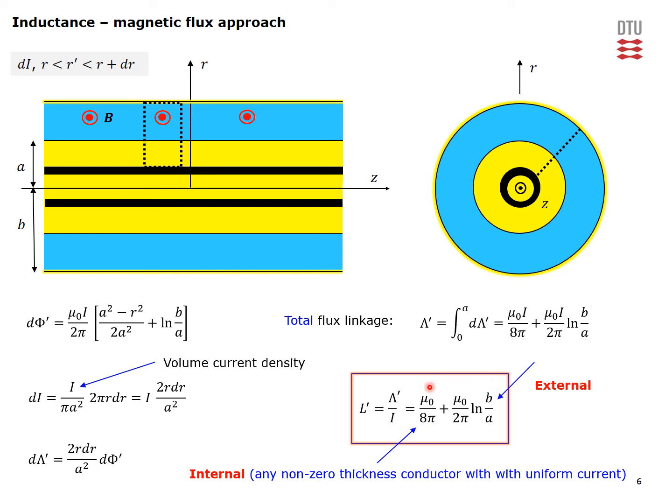The resulting inductance is composed of two terms. The first is due to flux internal to the inner conductor, known as internal inductance. The second is due to the B field in the region between the two conductors, called external inductance. The internal inductance term applies to any non-zero thickness conductor carrying a uniform current over its cross-section.